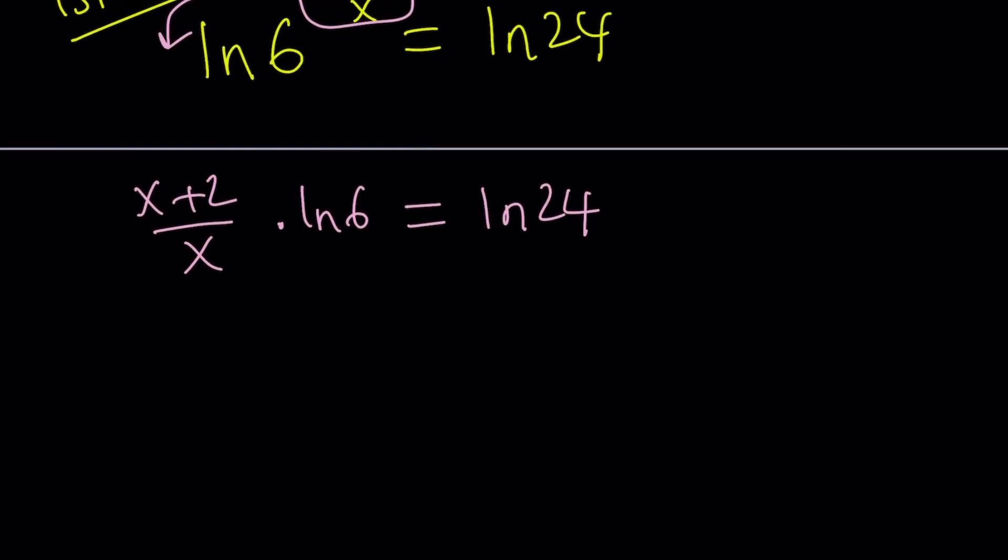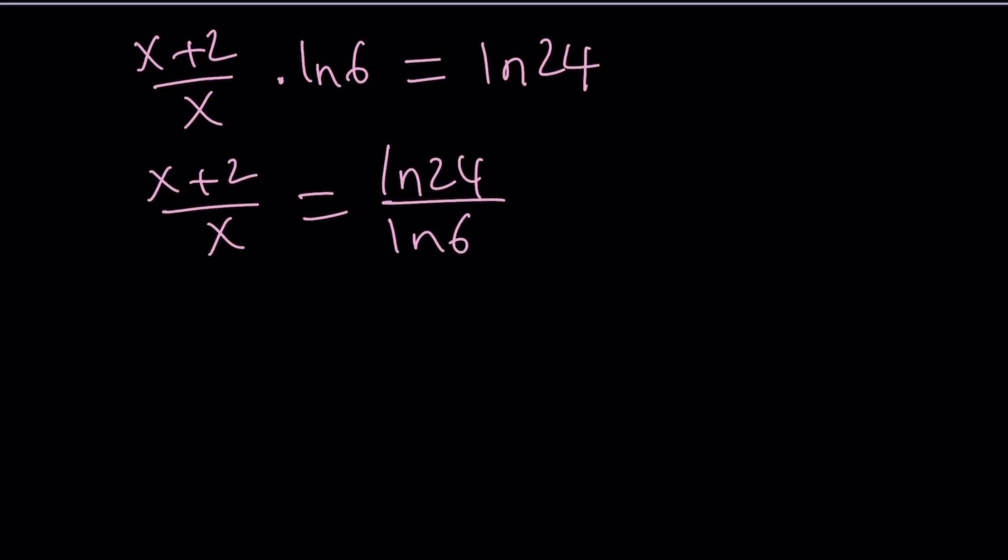Now obviously a lot of people are going to think about division at this point, which kind of makes sense. So let's divide both sides by ln 6, and that gives me ln 24 over ln 6 equals x plus 2 over x. You can cross multiply, solve for x, so on and so forth, but I got another alternative for you.